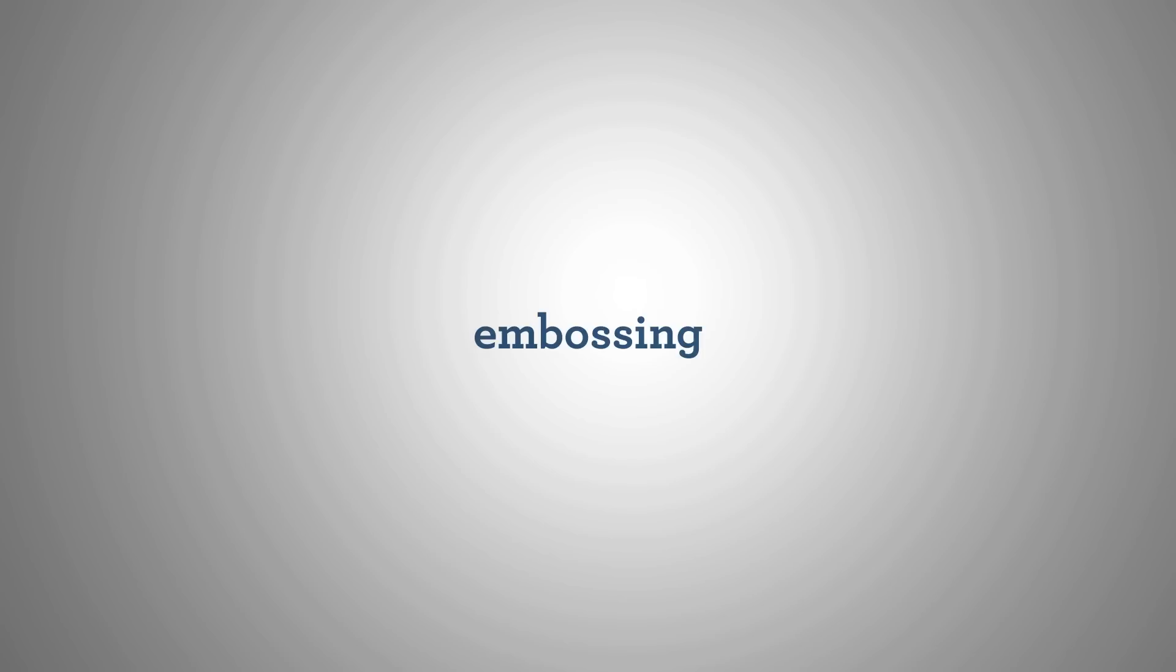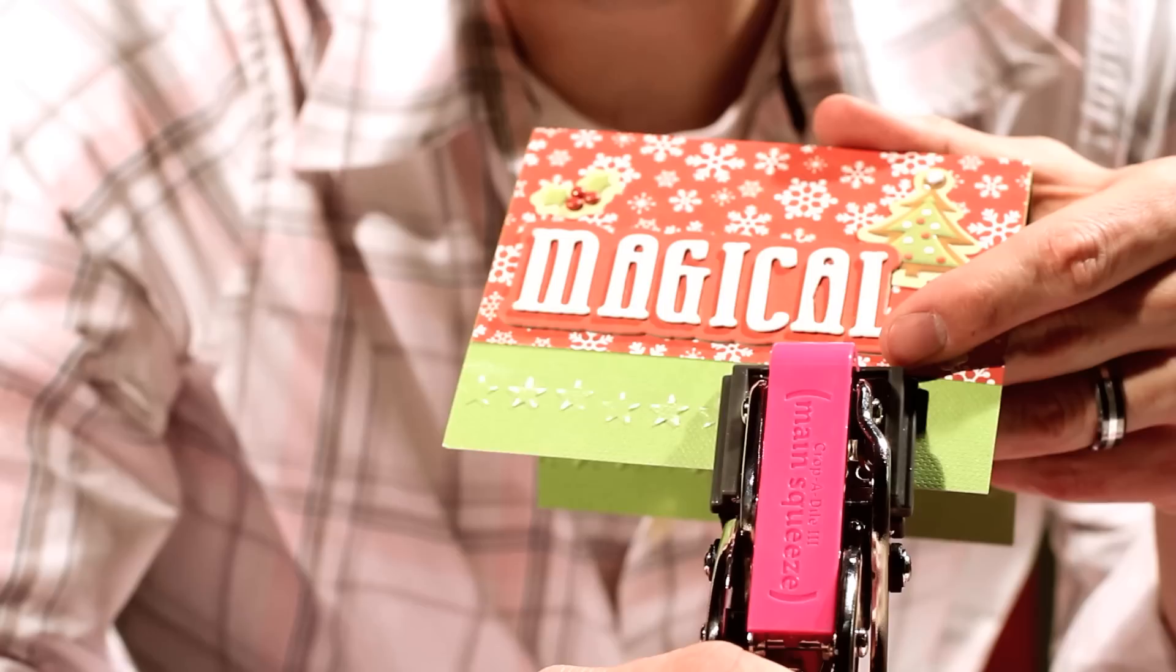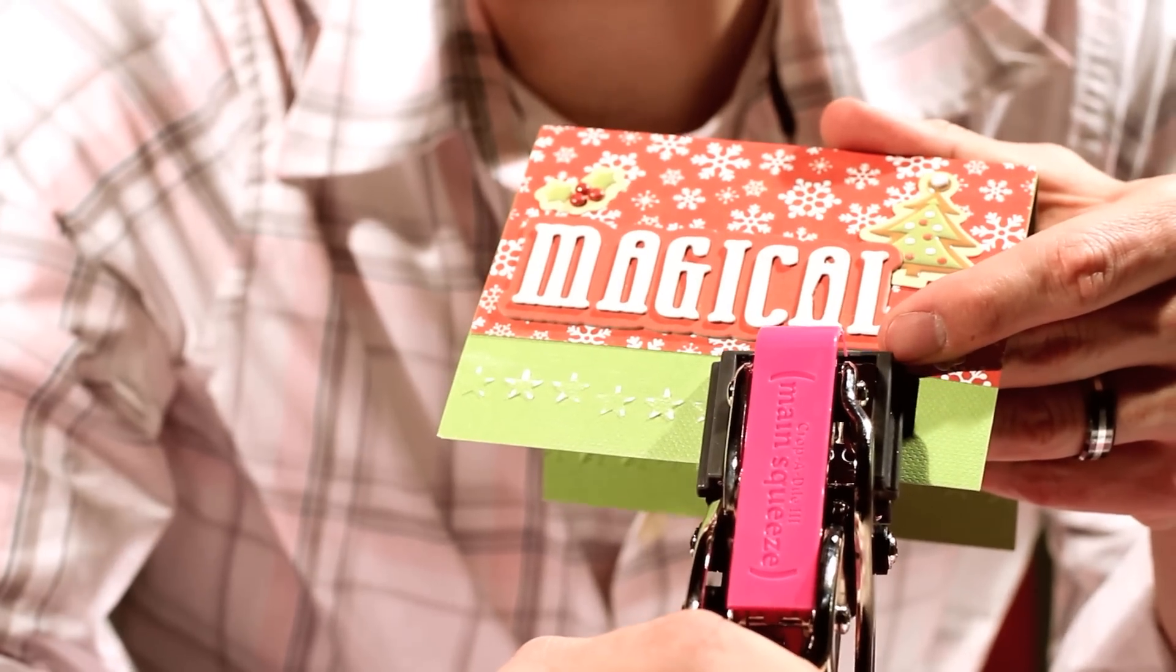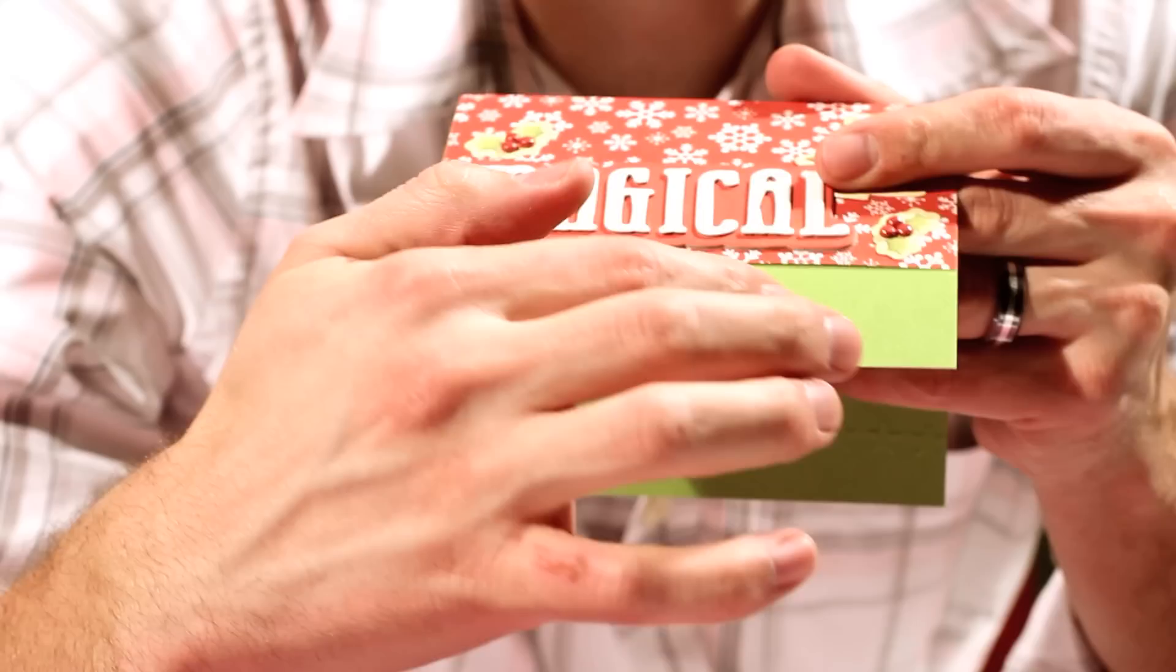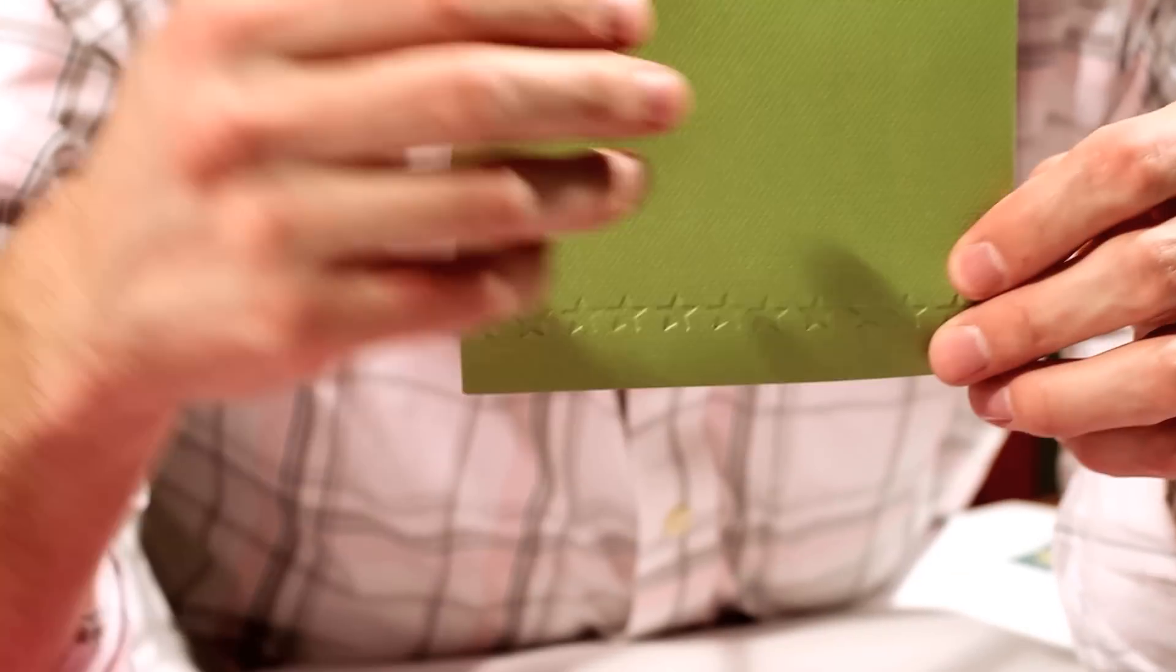Embossing with the Cropodile 3 is an easy way to add some nice texture to your projects. With over 10 embossing styles to choose from, make sure your plates are attached to the tool in the appropriate position. Then, line up the part of your project you want to emboss in between the plates and squeeze firmly. It'll give you a nice embossed design on the top of your project.